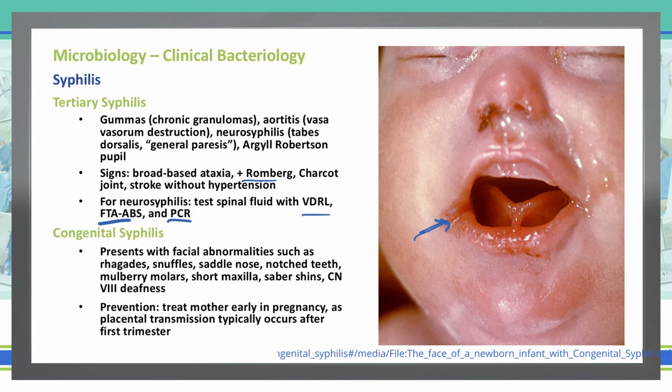To prevent congenital syphilis, we want to treat the mother early in pregnancy to keep it from crossing the placental barrier and transmitting to the infant during the first trimester. Mothers with syphilis need to be treated as soon as possible with penicillin G to decrease the risk of transmitting it to her baby.